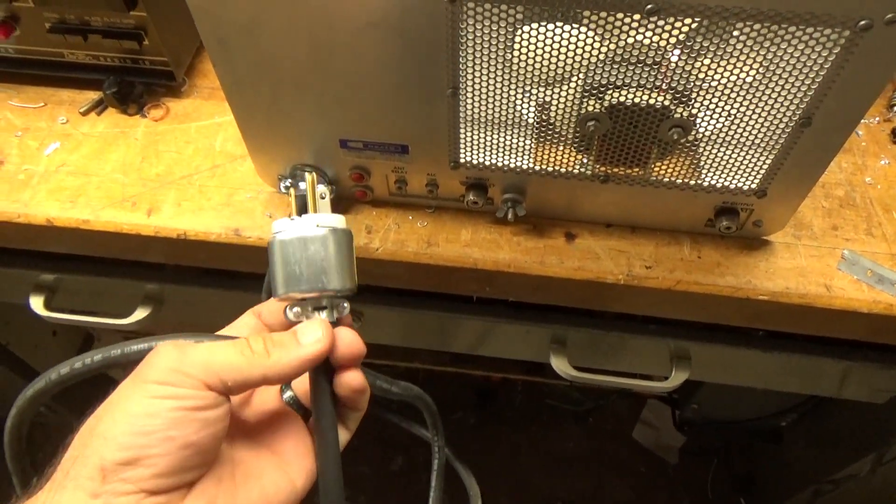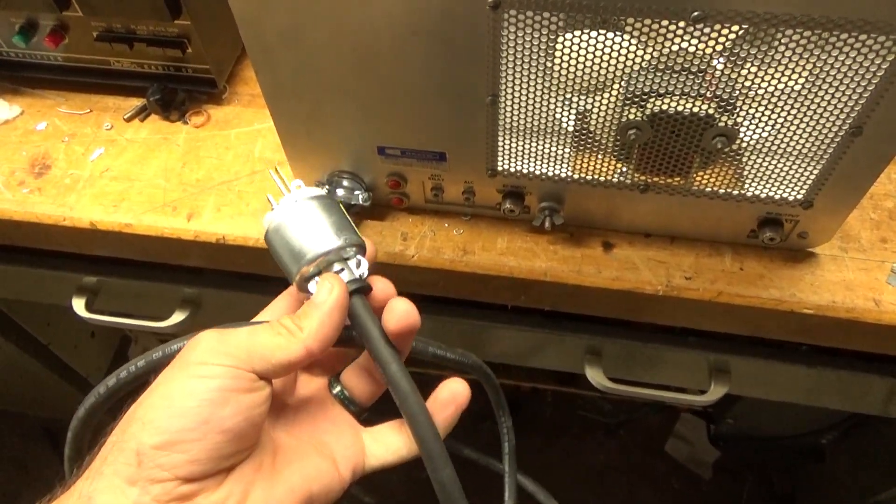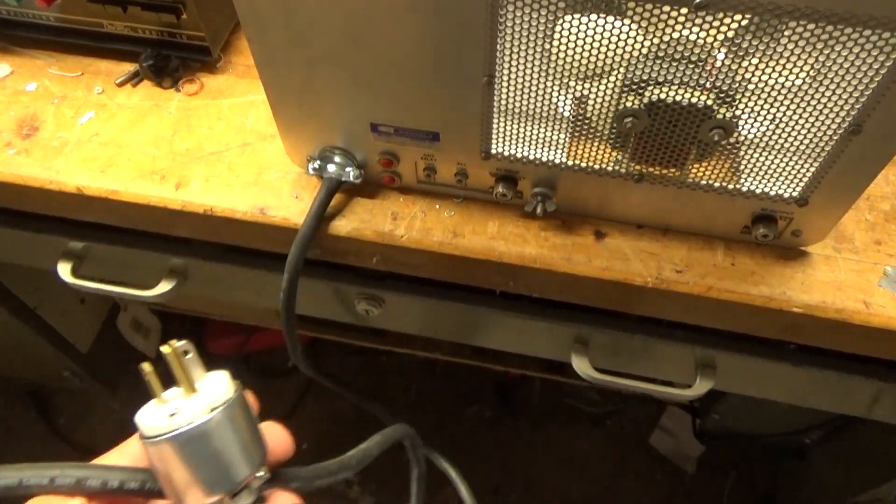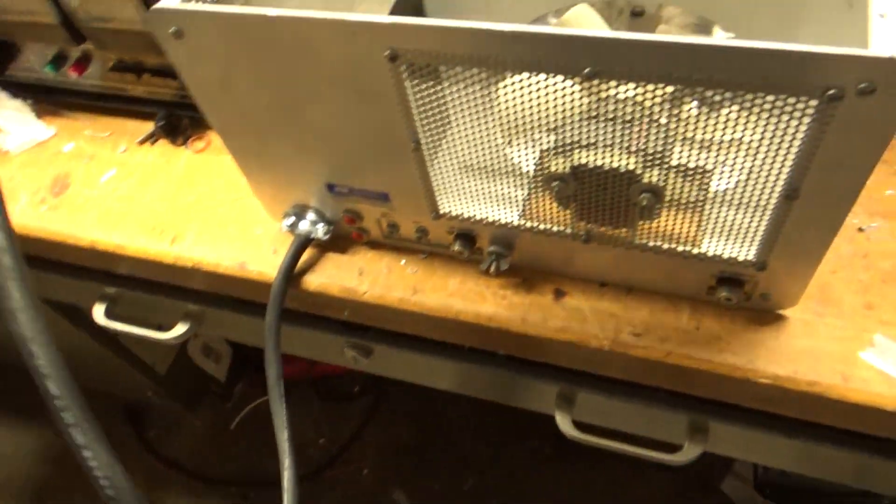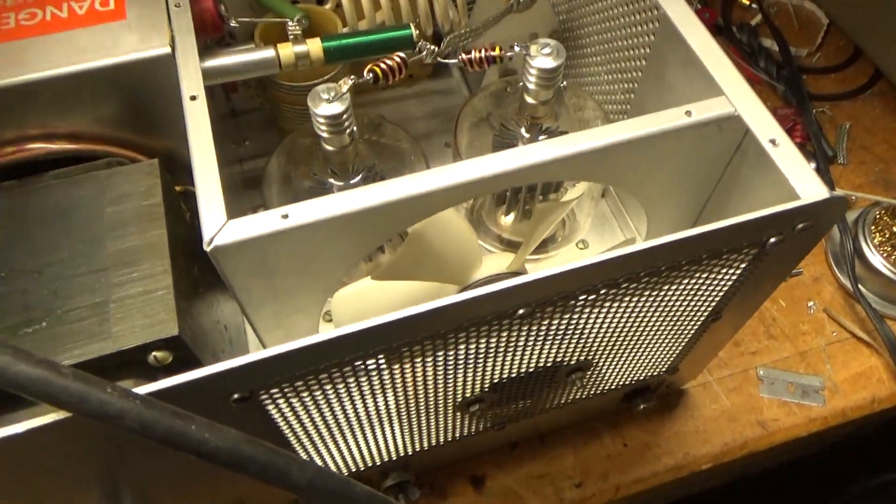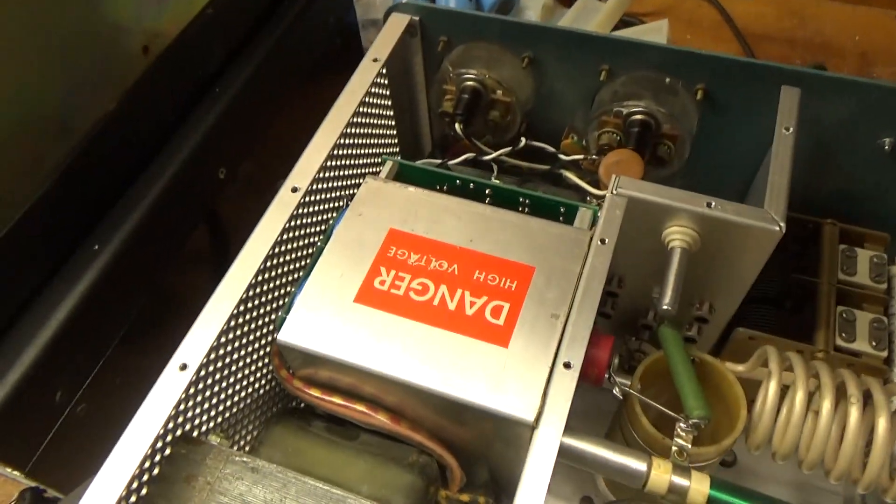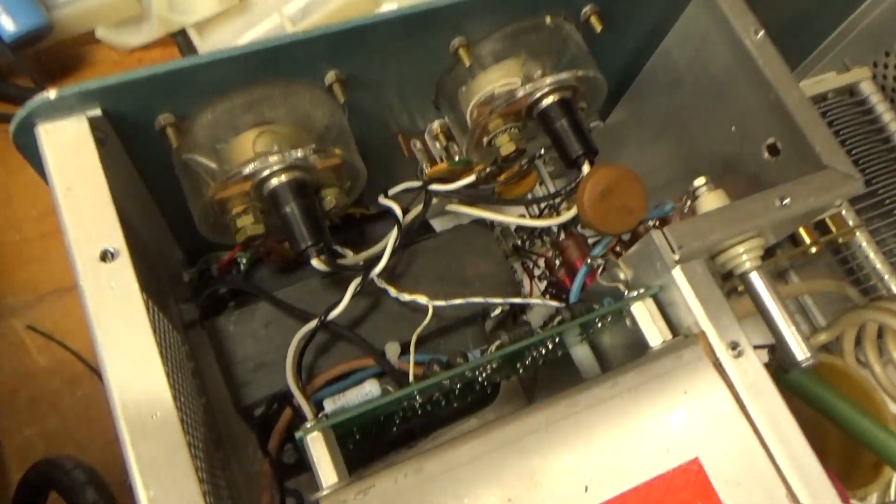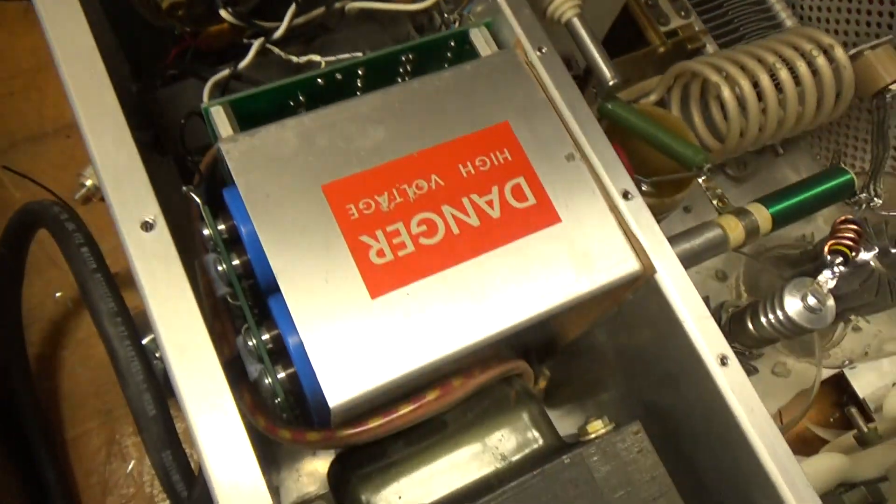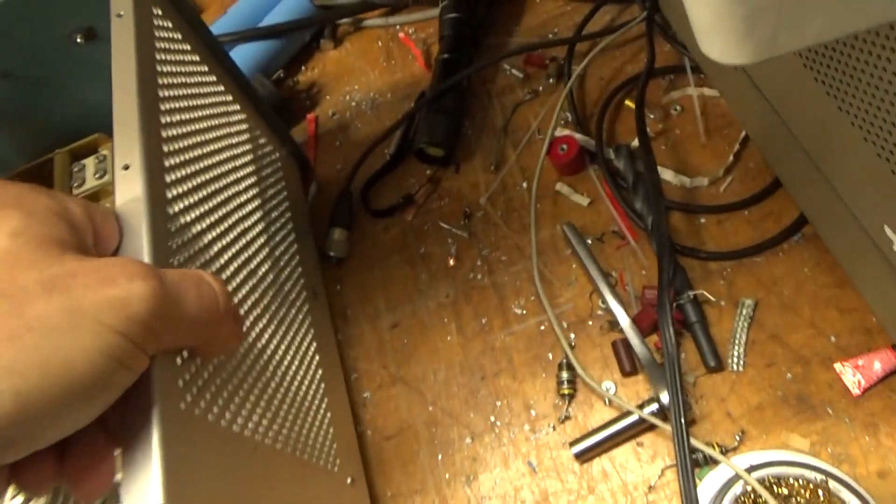Came to me wired for 120. The customer wanted it wired for 240. So, new plug, new cord. The other one had been repaired. As I said before, replaced the meter lamp bulbs. Put in the Harbaugh boards.